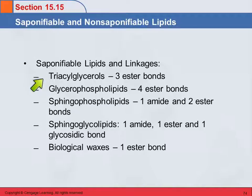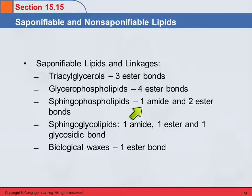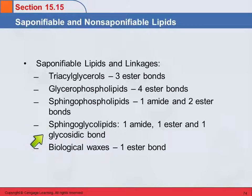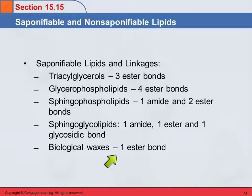Triacylglycerols had three ester bonds. Glycerophospholipids had four. The sphingophospholipids had one amide and two ester bonds. The sphingoglycolipids had one amide, one ester, and one glycosidic. And the biological waxes had one ester bond. So they all have at least one ester, and some have a couple of other things, but they're all saponifiable.